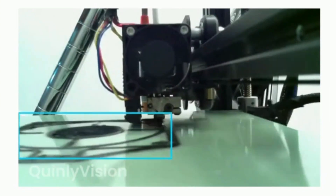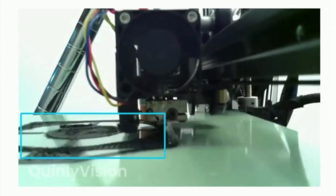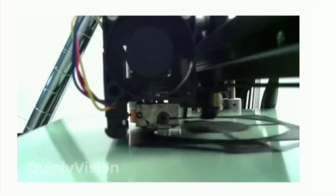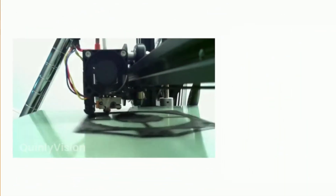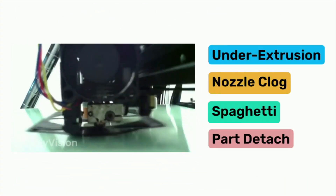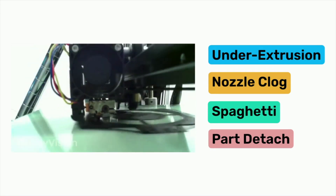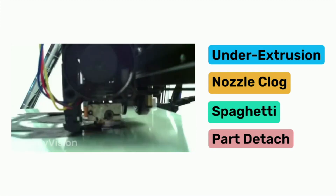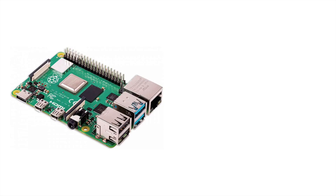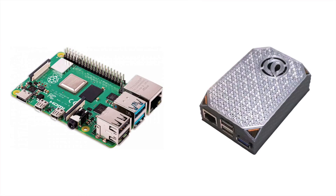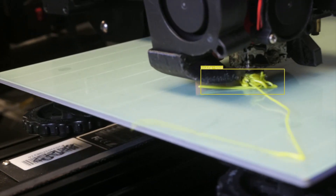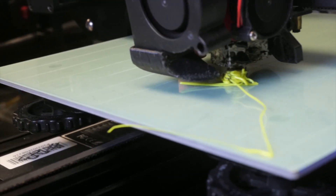Quinley Vision watches your printer using a webcam, and it uses a machine learning algorithm to identify 14 different types of 3D printing fails. Quinley Vision runs on a Raspberry Pi or a Quinley wireless hub, and it can be used by itself or along with Quinley Automation.